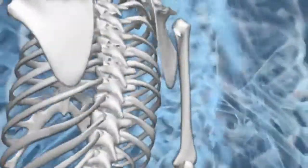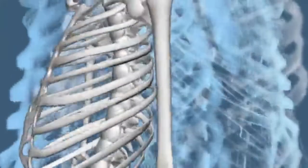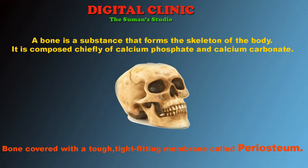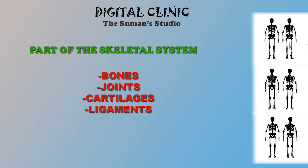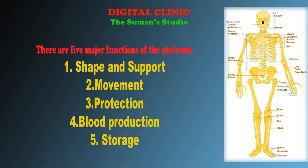Bone is the substance that forms the skeleton of the body. It is composed chiefly of calcium phosphate and calcium carbonate. It also serves as a storage area for calcium, playing a large role in calcium balance in the blood. The skeletal system includes the bones of the skeleton and the cartilage, joints, ligaments, and other connective tissues that stabilize or connect them.